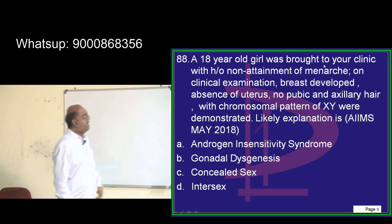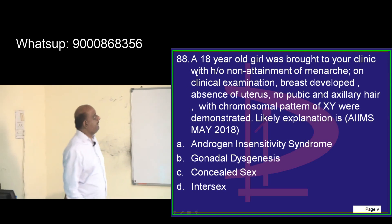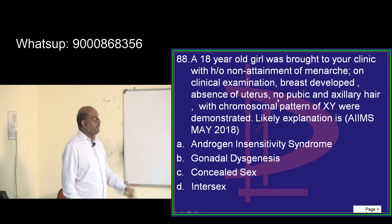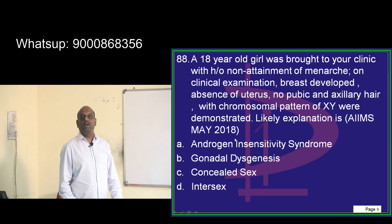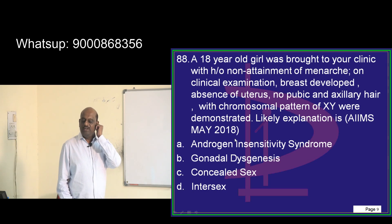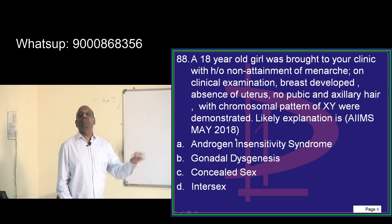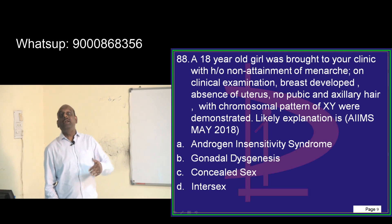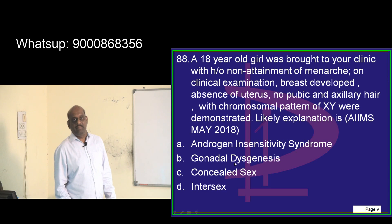An 18-year-old girl is brought to the clinic with non-attainment of menarche. Breasts have developed, but there is no uterus, no pubic hair, and no axillary hair. The chromosomal pattern is XY. This is testicular feminization syndrome, otherwise called androgen insensitivity syndrome.